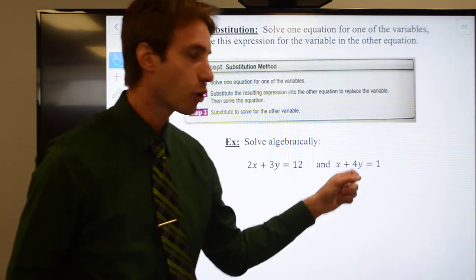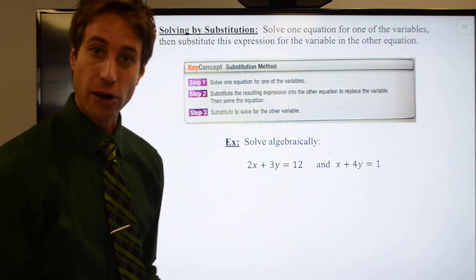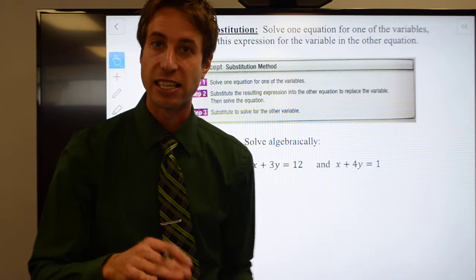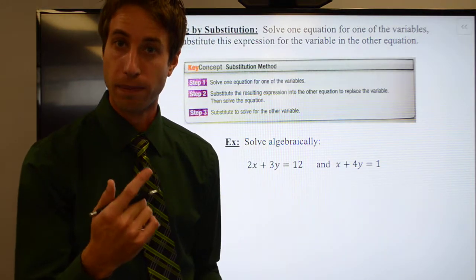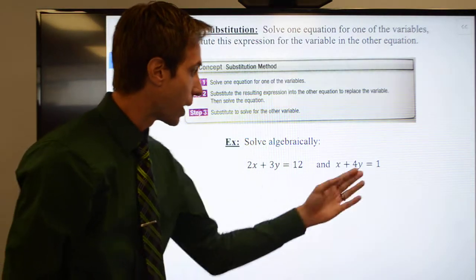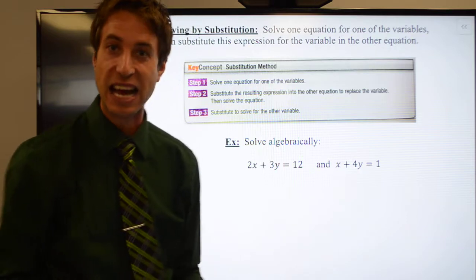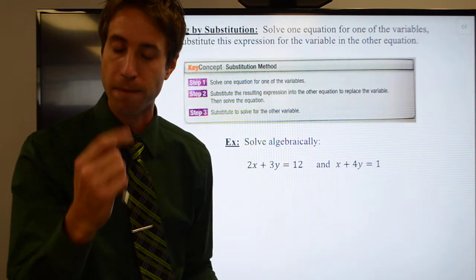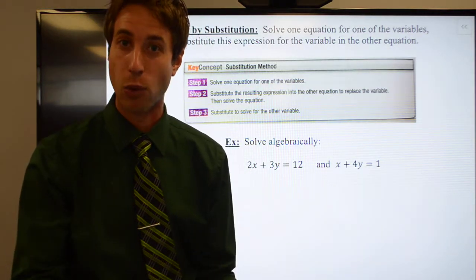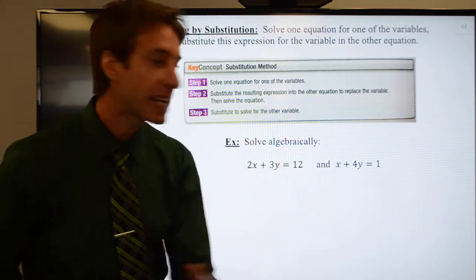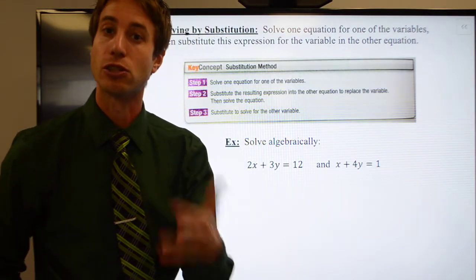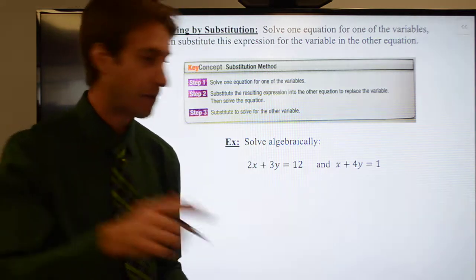In this case, I have one equation where one of my variables, the x, has a coefficient of one. So if you ever have an equation where a variable has either a coefficient of one or a coefficient of negative one, what that does is it makes the equation very easy to solve for that variable. In fact, let me show you.